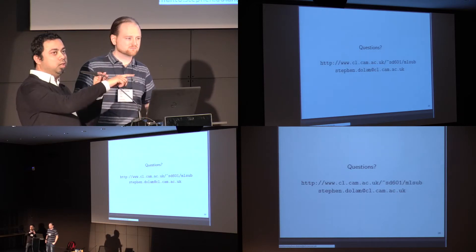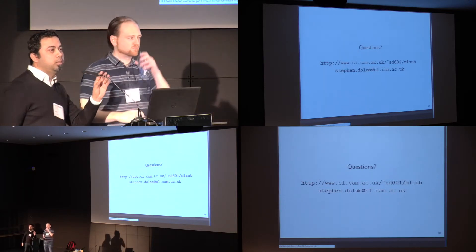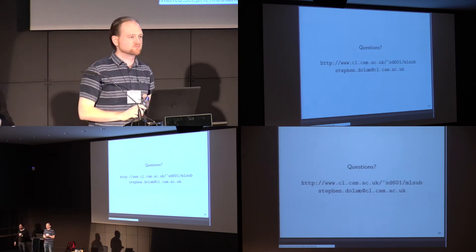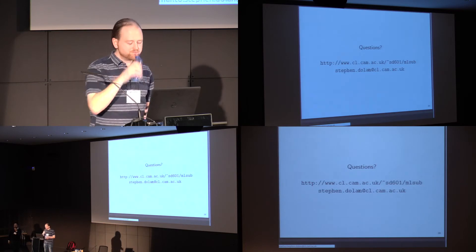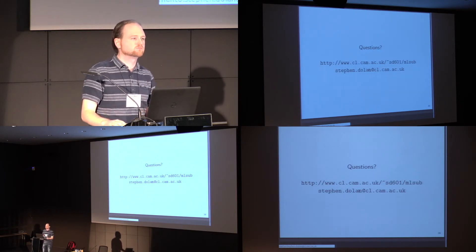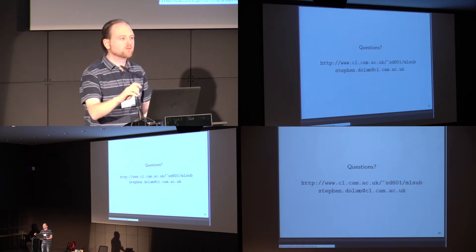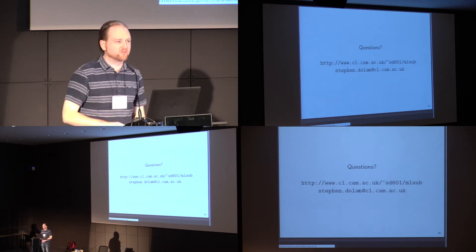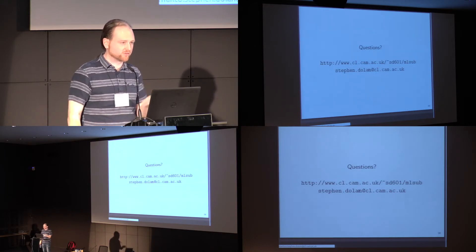We have some time for questions. [Question] So your types are restricting where you can have unions and intersections, which means it seems that users are not going to be able to write or use unions and intersections in general positions in their types. Is that right? And if so, have you thought about if you allow users to freely use unions and intersections, how that would impact the nice results that you're able to get?